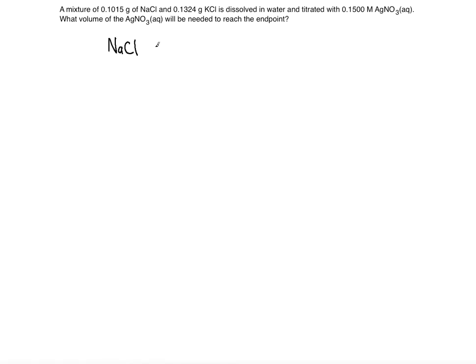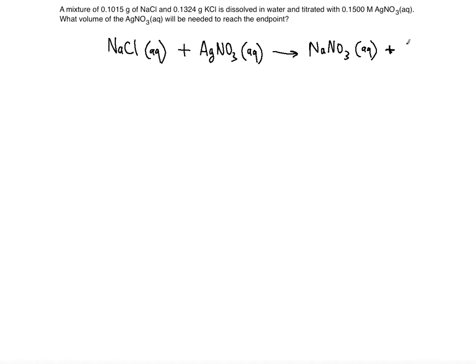The first thing is to write the reactions. First: sodium chloride aqueous plus the titrant, silver nitrate aqueous — these are the reactants — and the products are sodium nitrate and silver chloride, which is the solid, marked (s).